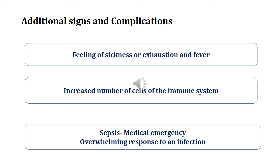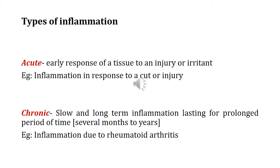Sepsis can result in multi-organ failure and can prove to be fatal, so it is a medical emergency. Inflammation is of two types: acute and chronic. Acute inflammation is the early response to an injury or irritant and typically lasts from two to six weeks, whereas chronic inflammation — as the word itself indicates — is long term, lasting for a prolonged period of time.